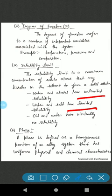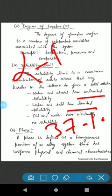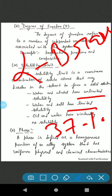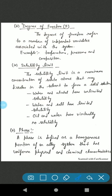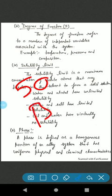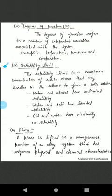Next is phase. What is phase? A phase is defined as a homogeneous portion of an alloy system that has uniform physical and chemical characteristics. For example, in brass, if we mix about 37 percent zinc in copper this will form alpha brass, and if I mix about 50 percent and more zinc this will form beta brass. These are some terms which are related to the phase diagram.